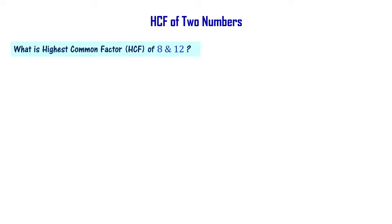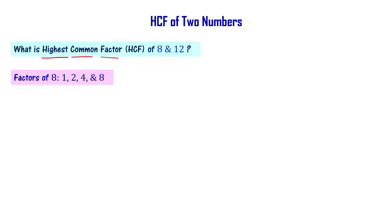What is the highest common factor of two numbers, 8 and 12? This is talking about highest common factor. Factors of 8 are 1, 2, 4 and 8. Factors of 12 are 1, 2, 3, 4, 6 and 12.